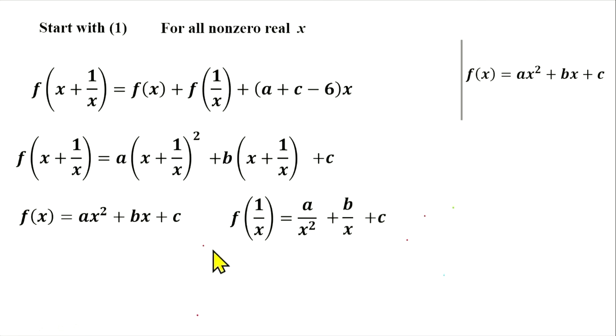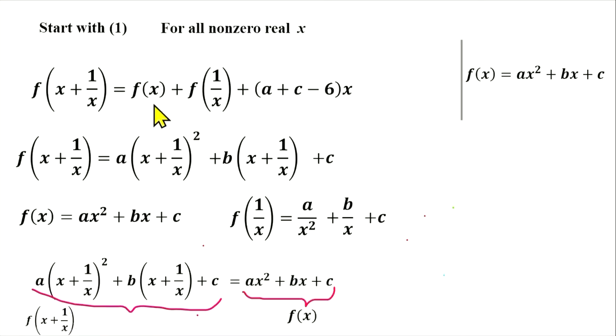We plug in all this stuff to the basic equation and we will have the following. The left hand side will have this form. In the right hand side we will have function f of x, then function f of 1 over x, and the third term.